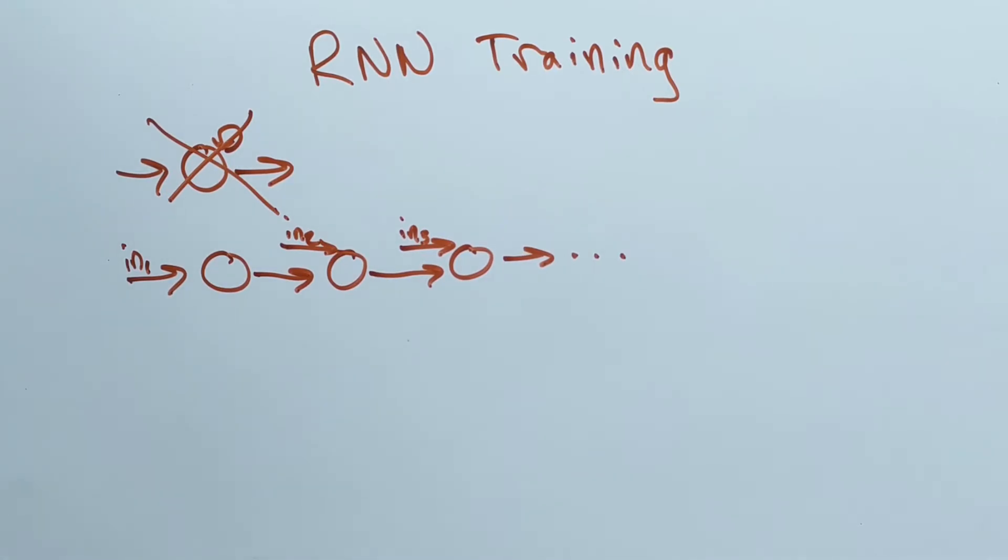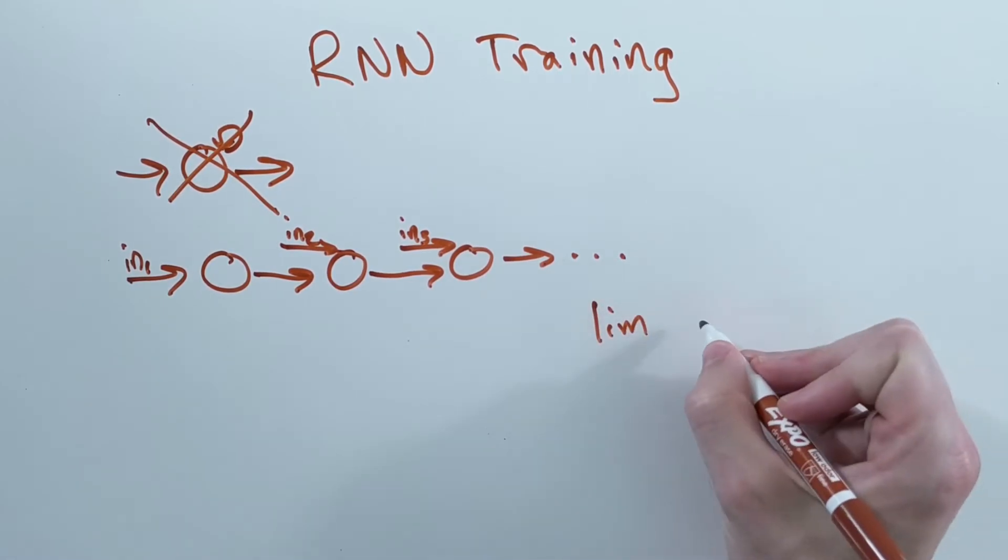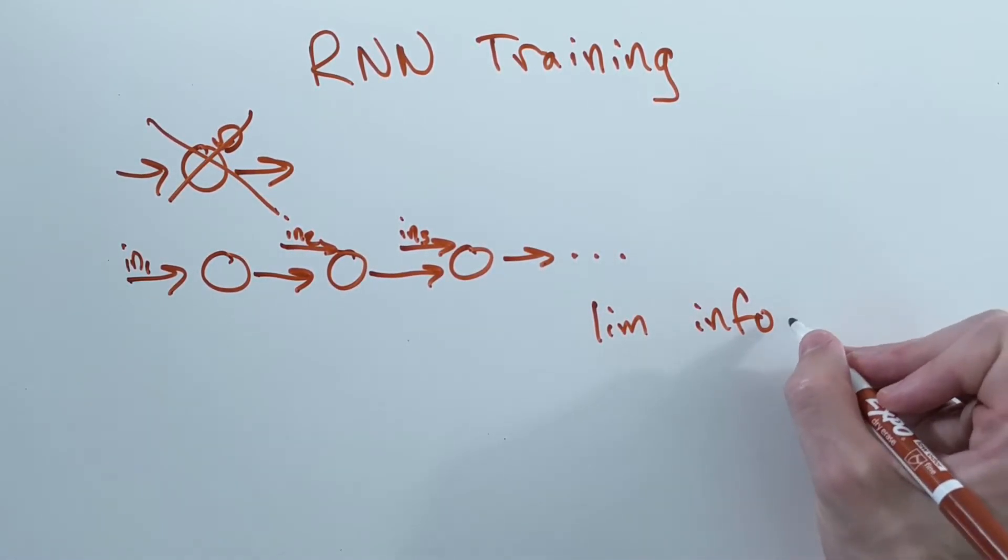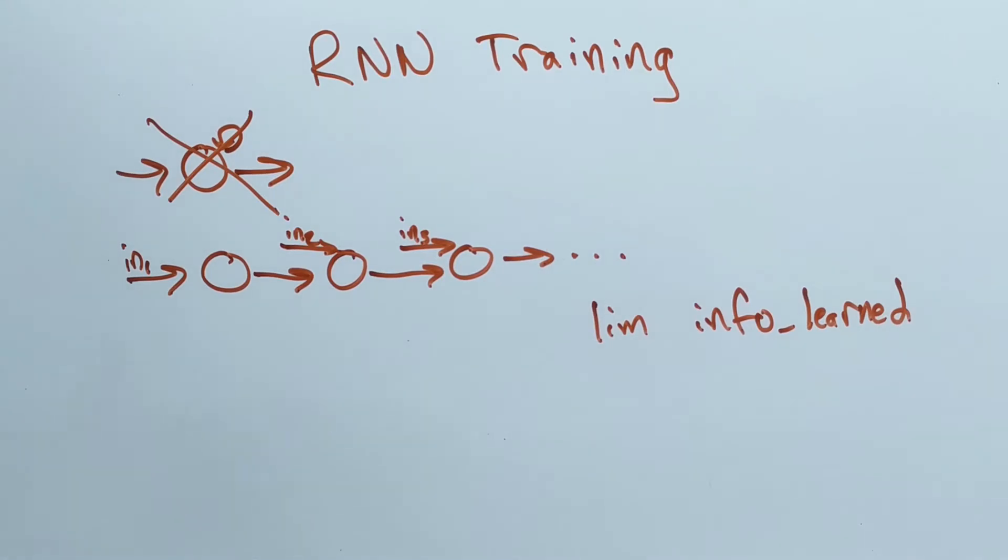Unfortunately, limiting the number of steps effectively imposes a limit on how much information the network is allowed to learn from during training, which means that during execution they don't necessarily understand information farther back in the sequence.